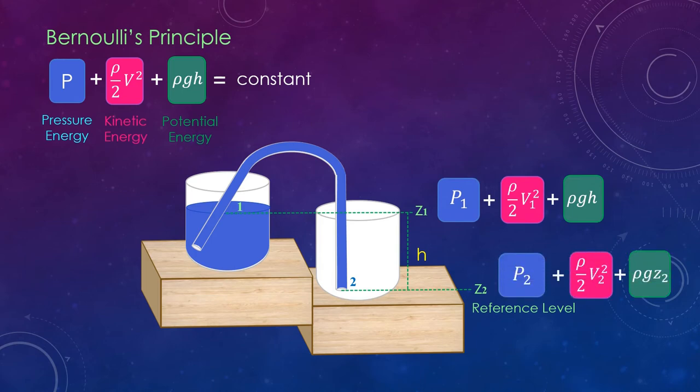Since point 1 and 2 are both at atmospheric pressure, we can replace the pressure energy term in both points as P_atm. The velocity of the fluid at point 1 is very small compared to the whole fluid at the surface, so v1 is set to zero. And z2 is the reference level so z2 becomes zero, and z1 is at height h so it is replaced by h. On rearranging the terms we get this equation.